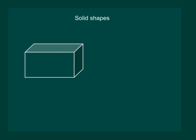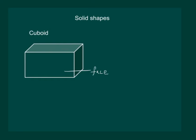Let us start studying a cuboid. We know that a cuboid is formed by joining of rectangles, and each rectangle is called its face. So each side of this cuboid is its face. The points where these faces meet are called the vertices, and the lines where these faces meet are called the edges.